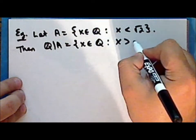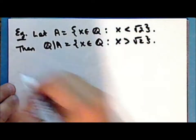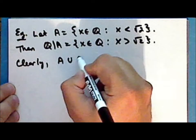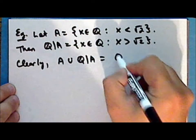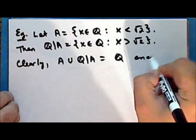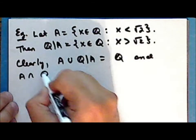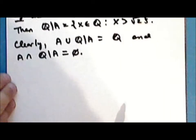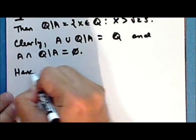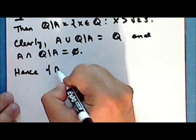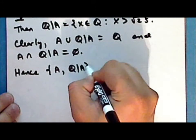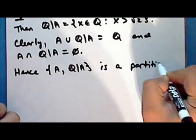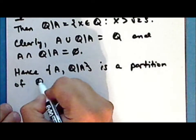Recall that we demonstrated that the square root of 2 is not rational. So let the set A be the set of all rational numbers that are strictly less than the square root of 2. Clearly, the union of A with its complement is the entire set of rationals, and the intersection of A with its complement is the empty set, and hence the pair consisting of A together with its complement is a partition of the set of rationals.